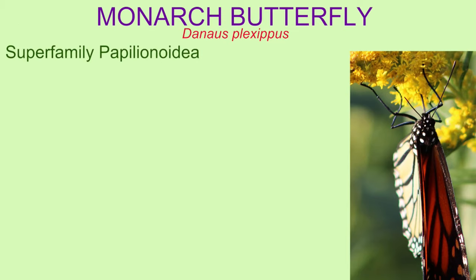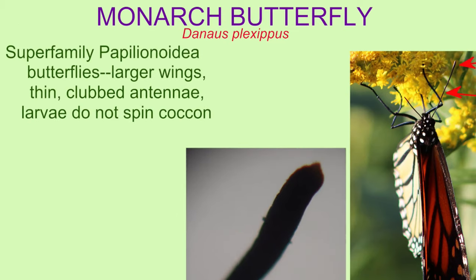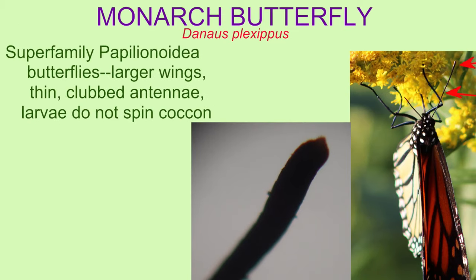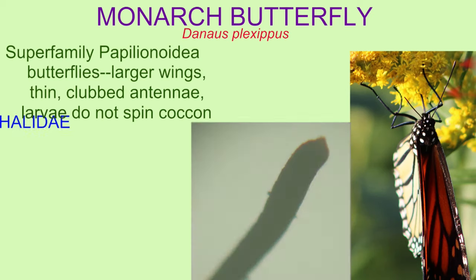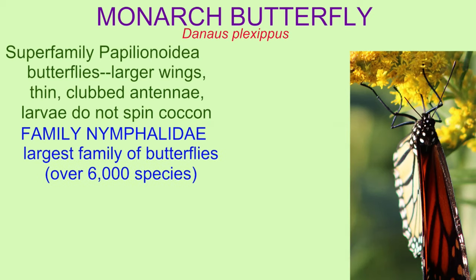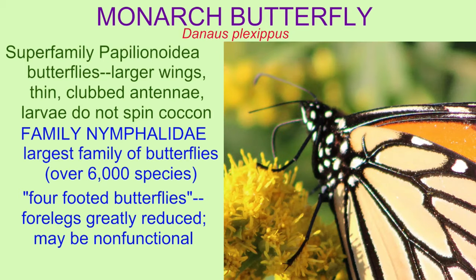Instead of being classified with diverse types of moths, monarch butterflies are classified in the superfamily that contains the butterflies, due to their larger wings, thin clubbed antennae — which are not feathery but end in a thickened region — and because their larvae do not spin a cocoon.